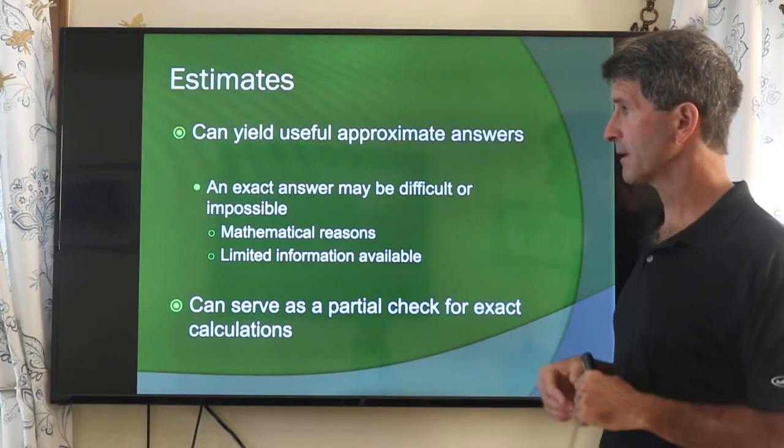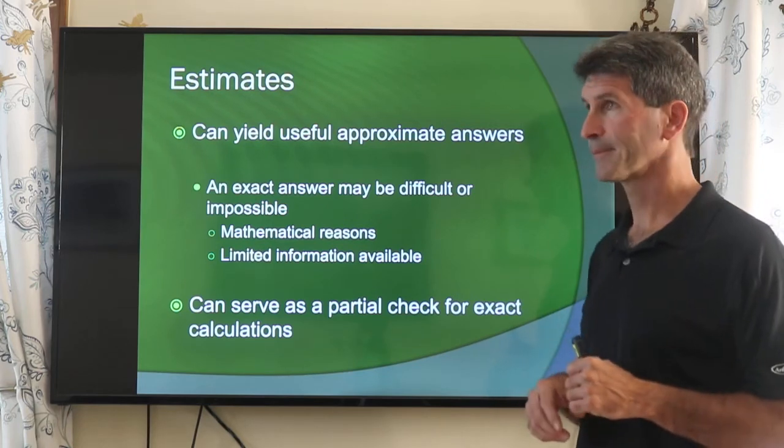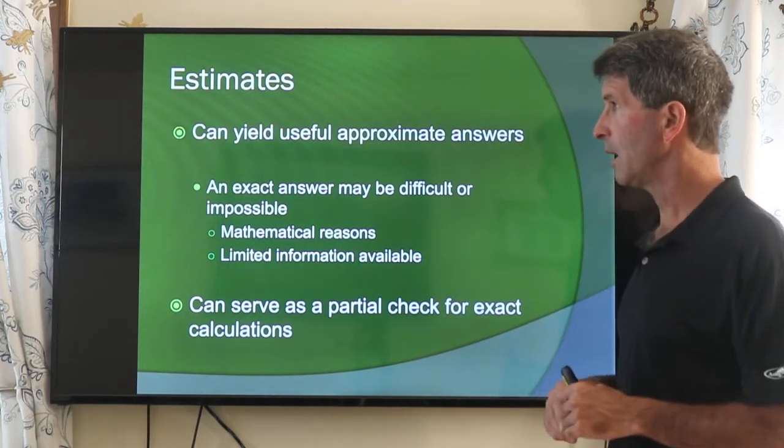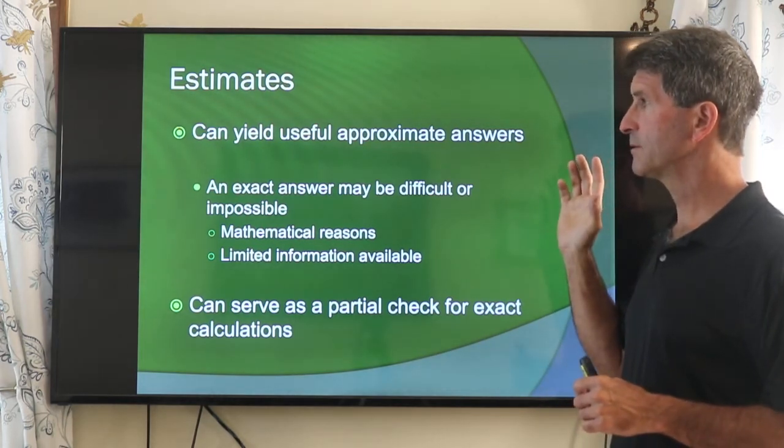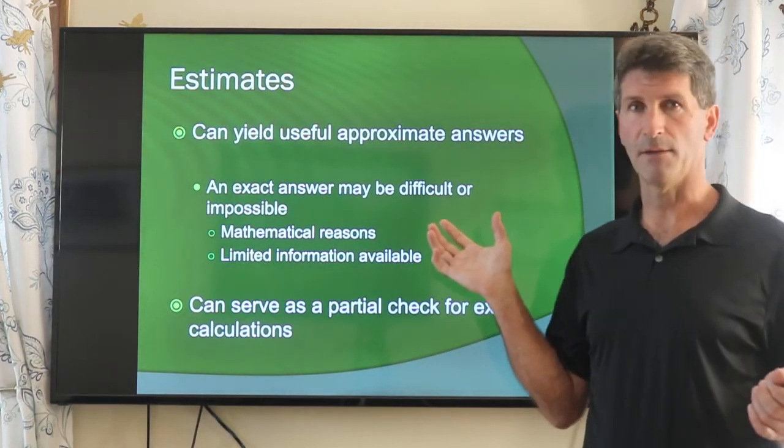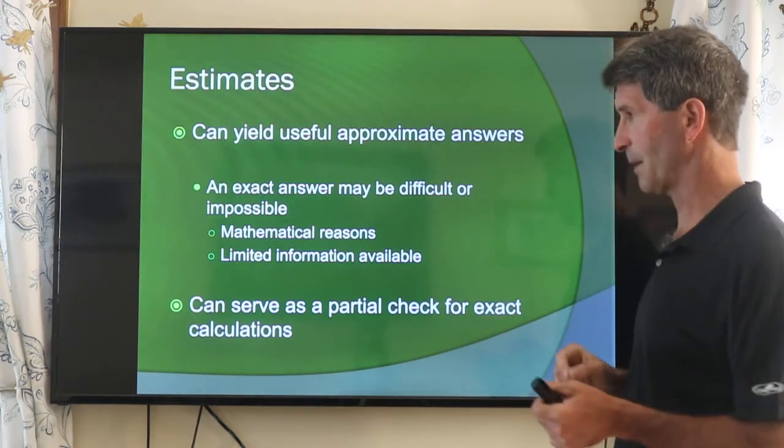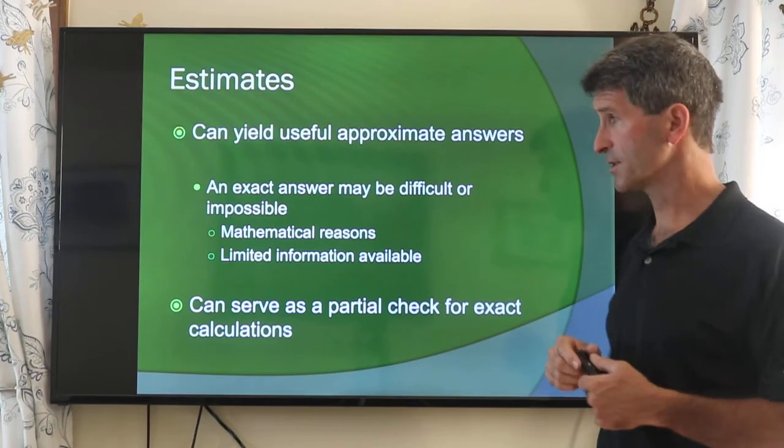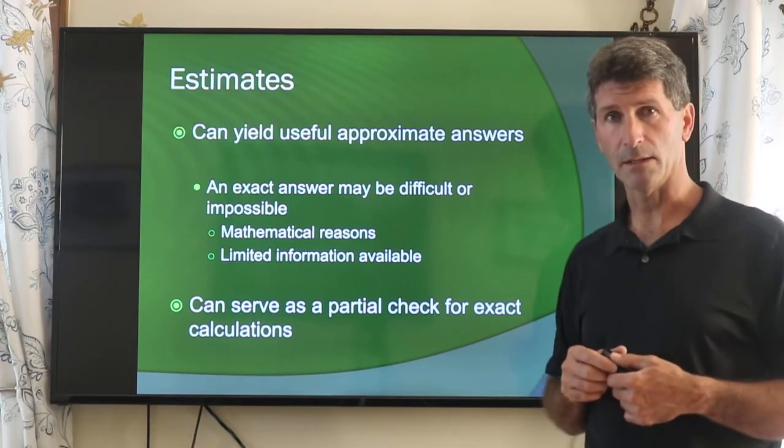So again, going through that whole power of 10 type argument, you can do what we call back of the envelope calculations because you can use a scrap piece of paper. We can do useful approximation to see whether or not what we've calculated makes sense.